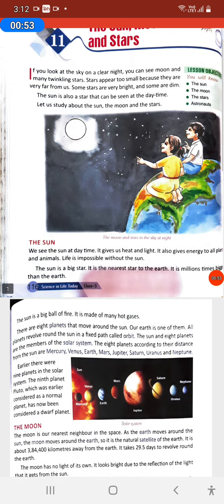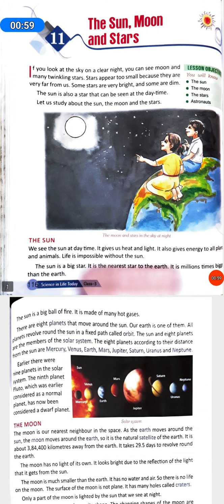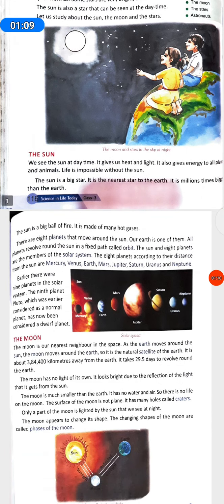The Sun. We see the sun at daytime. It gives heat and light. It also gives energy to all plants and animals. Life is impossible without the sun. The sun is a big star. It is the nearest star to the earth. It is millions of times bigger than the earth.